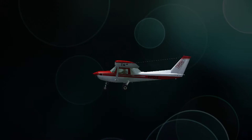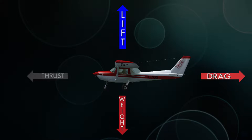There are four forces that act on an airplane in flight: lift, drag, weight, and thrust. Lift is an upward force created by the wings. Drag is all the parts of the airplane sticking out into the airflow and resisting the forward motion. Weight is the weight of the airplane being pulled towards the center of the earth, and thrust is provided by the propeller to propel the airplane forward through the air.